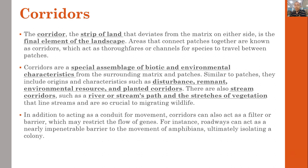Next are corridors. A corridor is a strip of land that deviates from the matrix on either side and is the final element of the landscape. Areas that connect patches together are known as corridors, which act as a thoroughfare or channel for species to travel between patches. These corridors are a special assemblage of biotic and environmental characteristics from the surrounding matrix and patches.